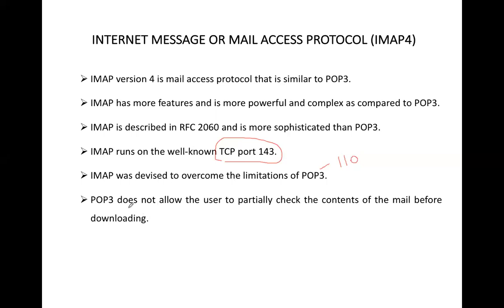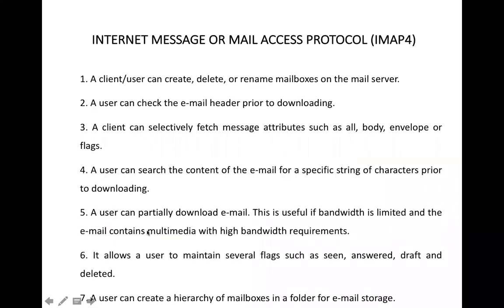POP3's limitation is that it does not allow the user to partially check the content of the mail before downloading. With POP you cannot see anything about the mail until you download it completely. For example, when you open Gmail and click on a mail, you can see if there's an attachment and its name before downloading it — but with POP that is not possible. You cannot see anything until the entire mail is downloaded.